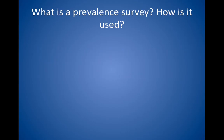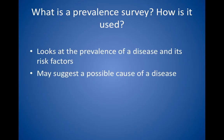What is a prevalence survey and how is it used? Prevalence or cross-sectional surveys look at the prevalence of a disease and its risk factors. When used to compare two different cultures or populations, a prevalence survey may suggest a possible cause of a disease. The hypothesis can then be tested with a prospective study. For example, researchers have found a high prevalence of colon cancer and a diet high in fat in the United States, versus a low prevalence of colon cancer and a diet low in fat in Japan.